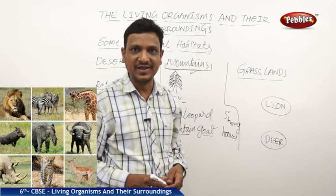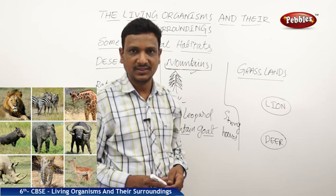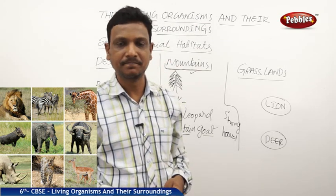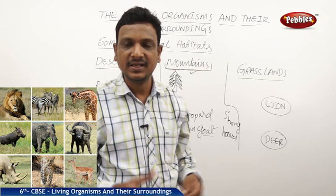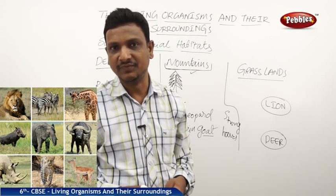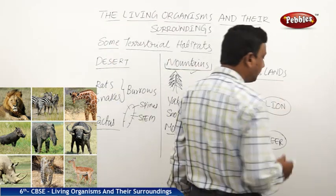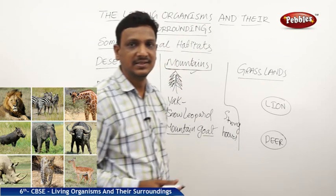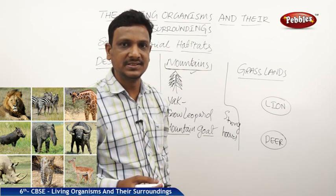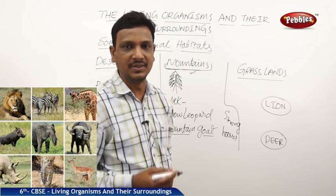The prey always tries to escape from the predator to survive. The predator tries to catch the prey to get its food. It's part of the food chain found in nature, where a predator eats the prey. Now let us see these two animals and their adaptations, and how these adaptations help them survive in their particular habitat — the grassland.